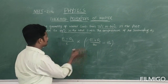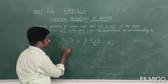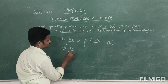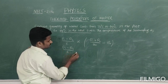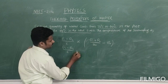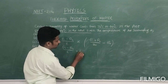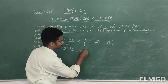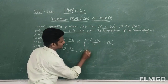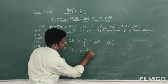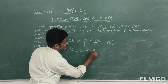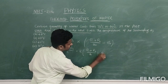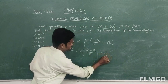So if you observe here, you can write (θ₁ − θ₂) divided by T, and removing the proportionality by introducing constant K, you can write: K into [(θ₁ + θ₂)/2 − θ₀], where θ₀ is the surrounding temperature.